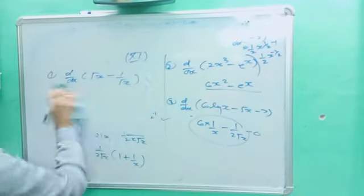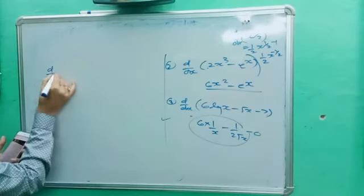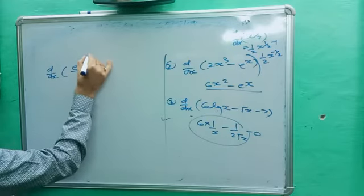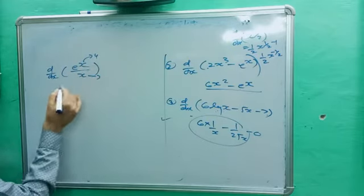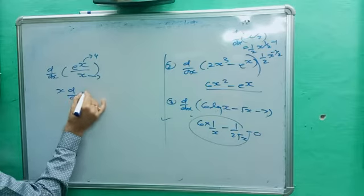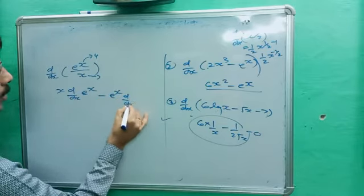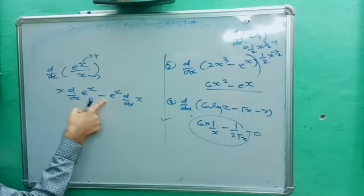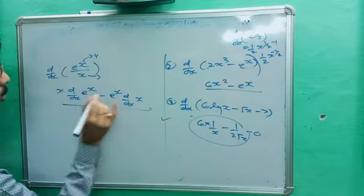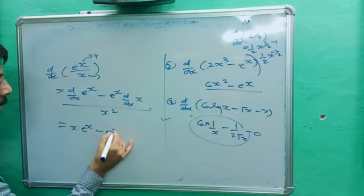Fourth question: d/dx of eˣ / x. This is u divided by v, so we apply the quotient rule: v · d/dx(u) minus u · d/dx(v), divided by v². So we get x · d/dx(eˣ) minus eˣ · d/dx(x), divided by x². This gives x·eˣ minus eˣ·1.